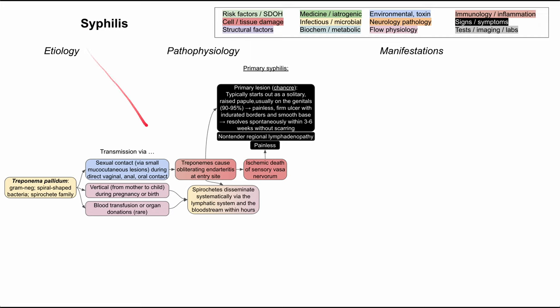No matter how you get syphilis — sexual contact, vertical transmission, or blood transfusion — it ends up spreading throughout the body. It disseminates throughout the body through the bloodstream and the lymphatics, and this can happen within hours; you'll have spirochetes throughout the body. This is how you end up getting secondary syphilis.